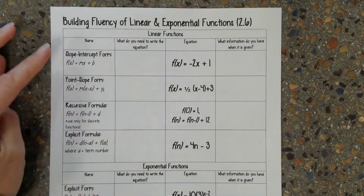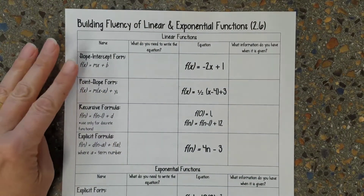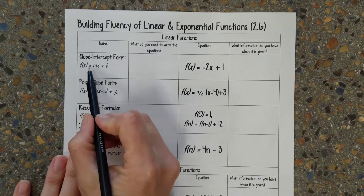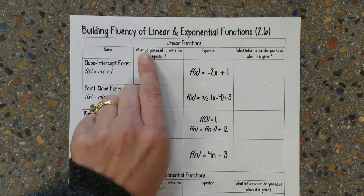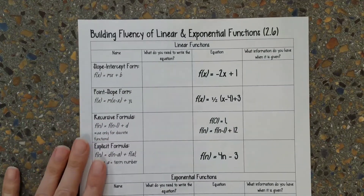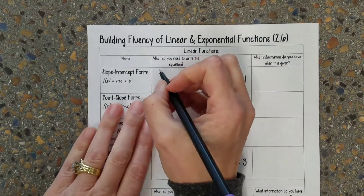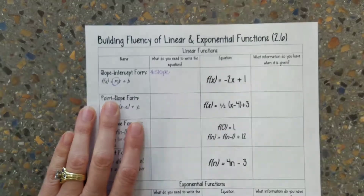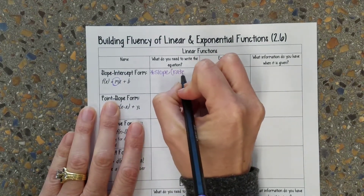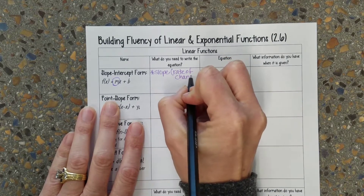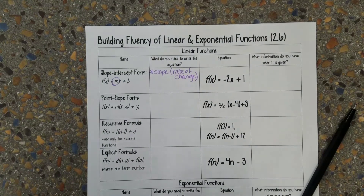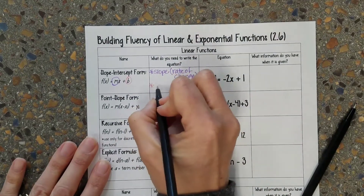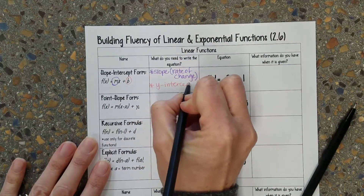The first one we're going to talk about with linear functions is our slope intercept form. Our slope intercept form is either y or f of x equals mx plus b. In order to write this equation, I need my slope, which is my m — or what we call rate of change. Remember those are interchangeable. And I also need my y-intercept, which is this b — that's where the line crosses over the y-axis.